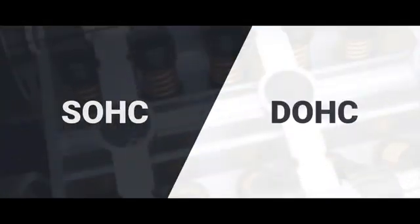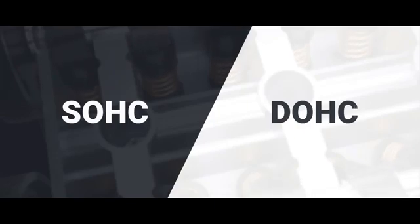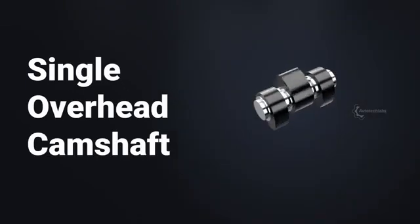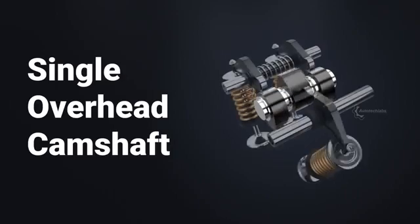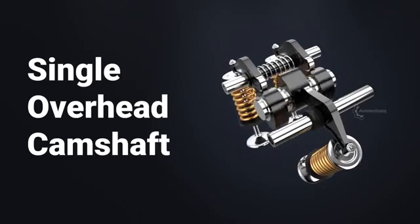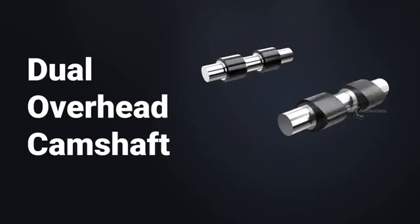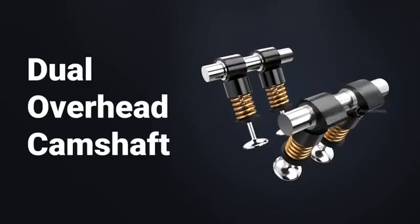SOHC and DOHC represent the valve configuration inside an engine head to control the action of the valves. Though these configurations are renowned for their superior performance, both have some significant differences. SOHC stands for single overhead cam, and utilizes only a single camshaft for operating both intake and exhaust valves. DOHC, or dual overhead cam, on the other hand, utilizes two independent camshafts for the operation of the intake and exhaust valves.